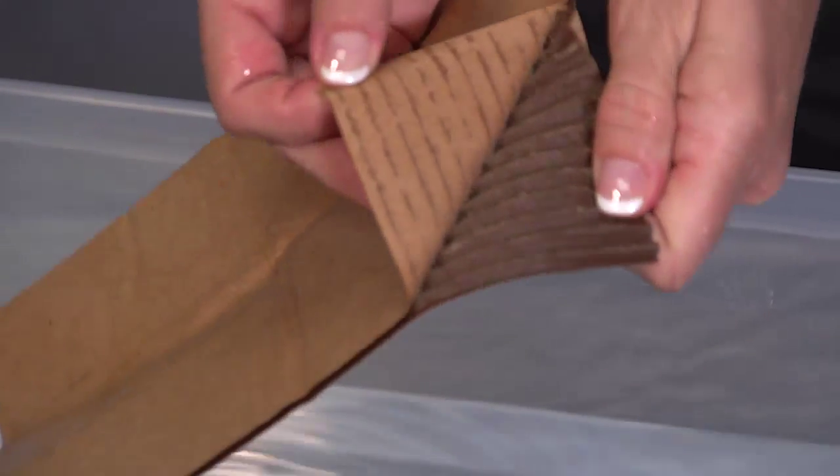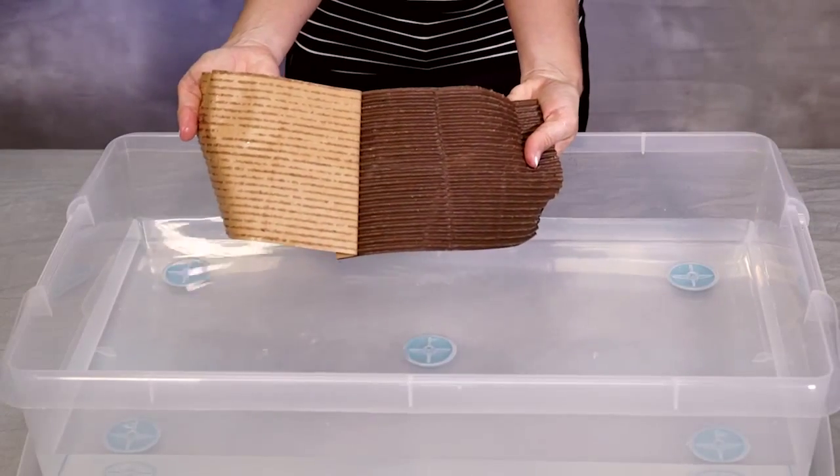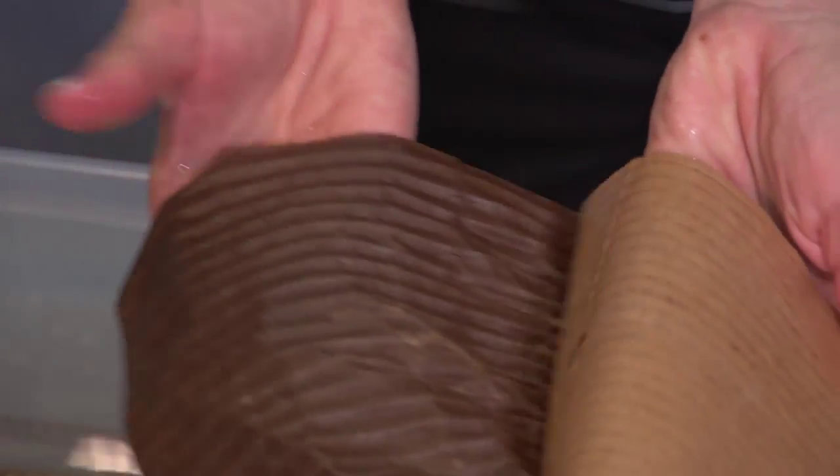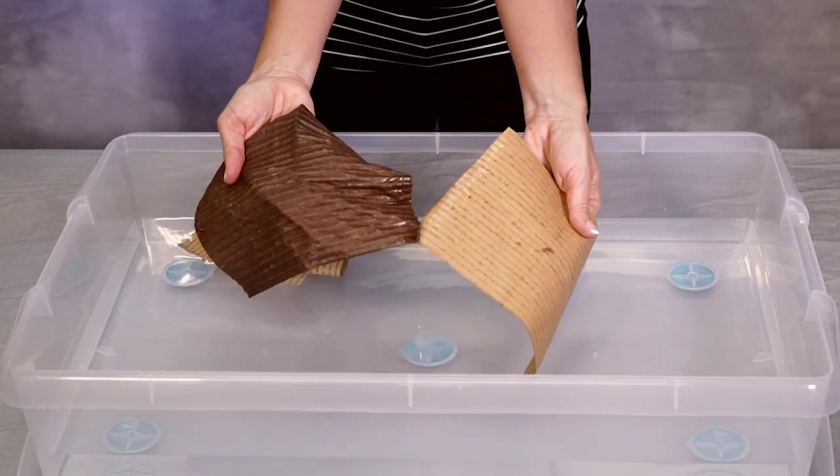Impregnating flute medium with wax helps it resist water, but applying wax takes expensive equipment and creates wax build-up and clean-up issues for corrugators.